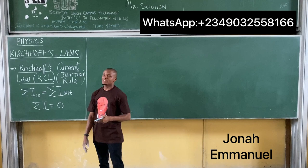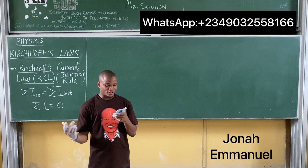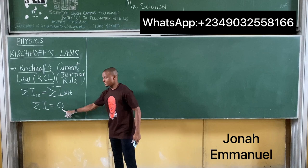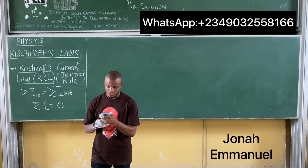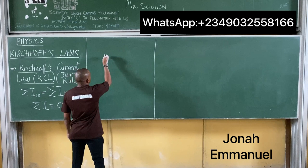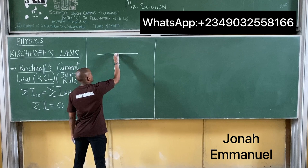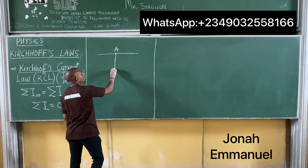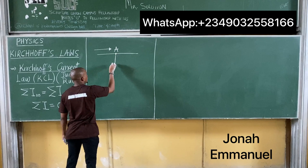This means that the total sum of current at any junction is equal to zero. Given a junction A, having currents I1, I2, and I3 as shown below.